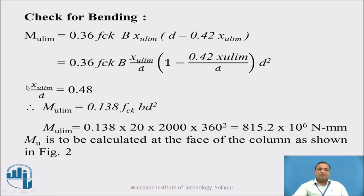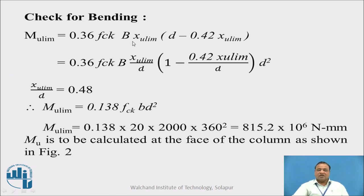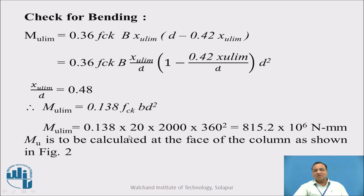Now let us check whether that particular depth is safe from bending moment consideration. MU limit is 0.36 × FCK × B × XU,limit × (D minus 0.42 × XU,limit), as per clause G.1.1C — that is the maximum moment carrying capacity of the footing in bending. XU,limit by D is 0.48 for Fe415. So MU,limit works out to be 0.138 × FCK × B × D². Substituting FCK = 20, B = 2000, D = 360 mm, it works out to be 815.2 × 10⁶ N·mm.